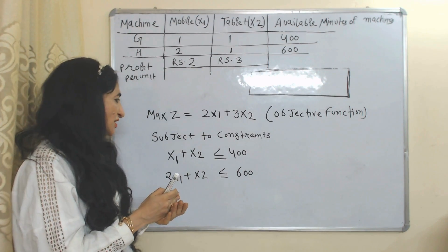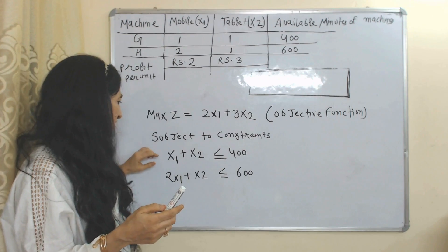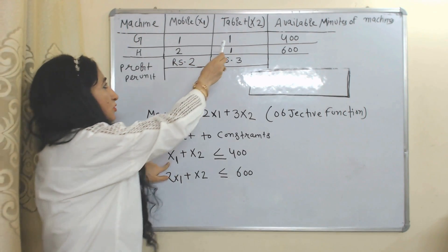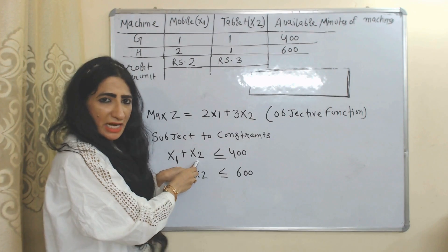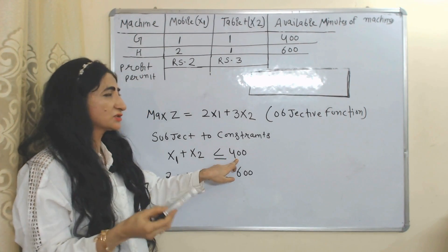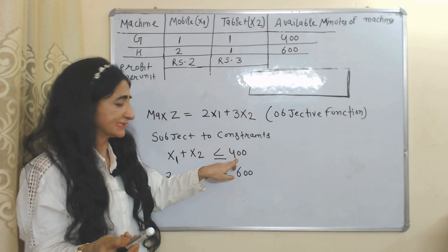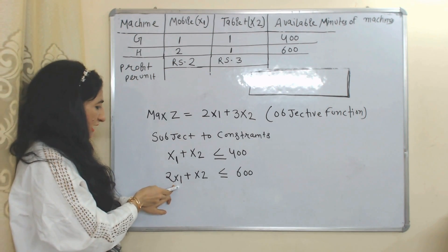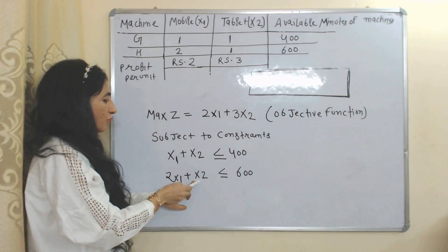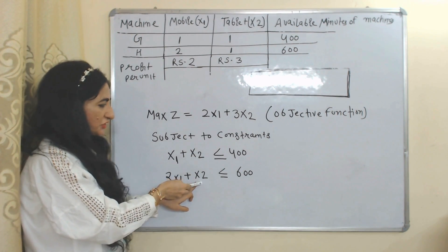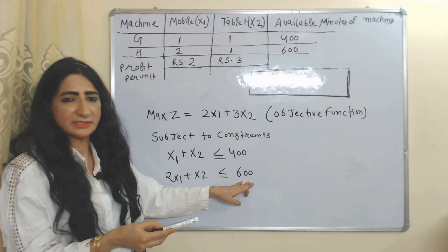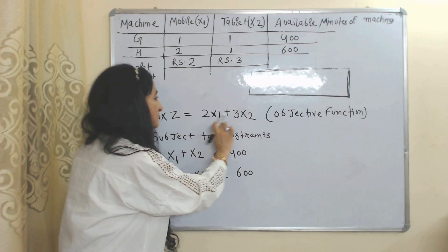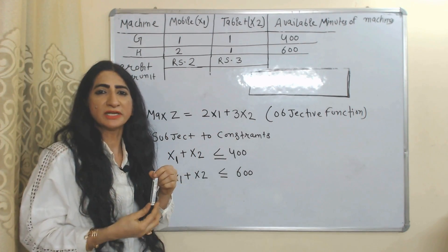This objective function is subject to constraints — our limitations. Mobile requires 1 minute processing time on machine G, and tablet also requires 1 minute on machine G. But machine G is not available for more than 400 minutes — this is our limitation. Similarly, mobile requires 2 minutes processing time on machine H, and tablet requires 1 minute on machine H. But machine H is not available for more than 600 minutes. Within these constraints, we have to maximize our objective. This is the main goal of a Linear Programming problem.